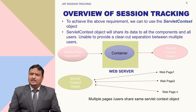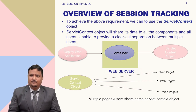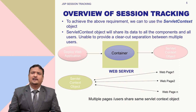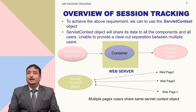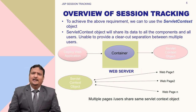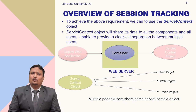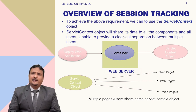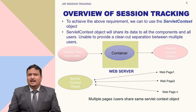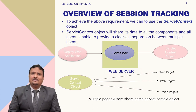This is a problem. To achieve the above requirement, we can use a servlet context object. Servlet context object will share its data to all components, but users are unable to provide clear separation between multiple users. The problem with the servlet context object is that it only gets created once and is shared between multiple pages. When you deploy a web application to the server, one container creates one servlet context object, and that object shares all data and resources with all web pages. Multiple users share the same servlet context object.